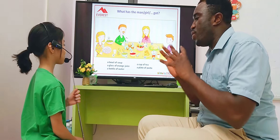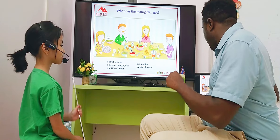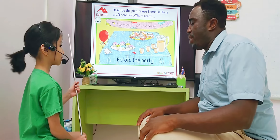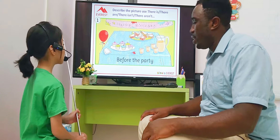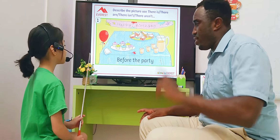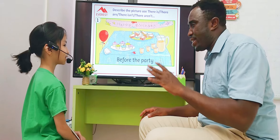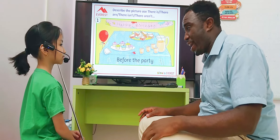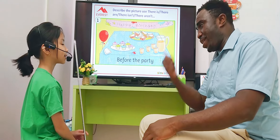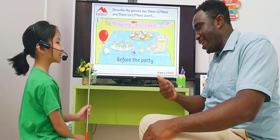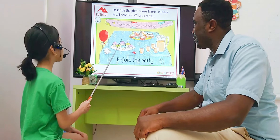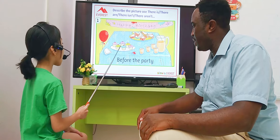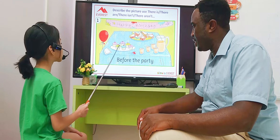Now, let's move on to the next slide. I want you to describe this picture using there is, there are, there isn't, and there aren't. Are you ready? Yes. Go. In this picture, there are six cakes.